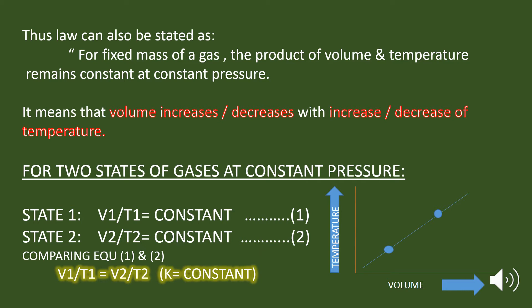For two states of a gas at a constant pressure, let's say the volume of a gas is V1 at the absolute temperature T1. Then we can write this as V1 by T1 is equal to K, where V1 is the volume of the gas, T1 is the temperature, and K is the constant.